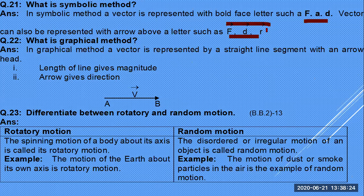Graphical method: a vector is represented by a straight line segment with an arrowhead. The distance between points A and B is the magnitude of the vector, and the arrowhead shows its direction.